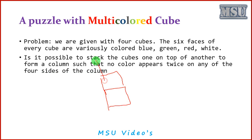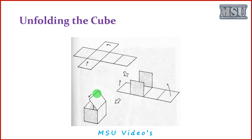We have six faces of cubes available. If we place the cubes one by one, there are four sides. We have to arrange the colors such that no two colors appear more than once. What we are going to do is consider a cube structure.